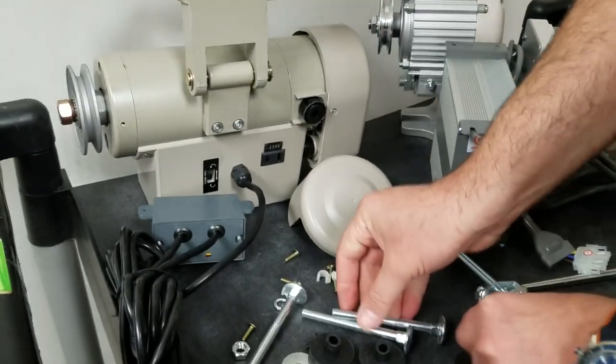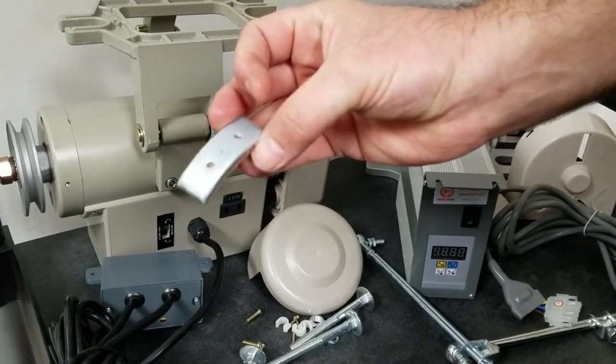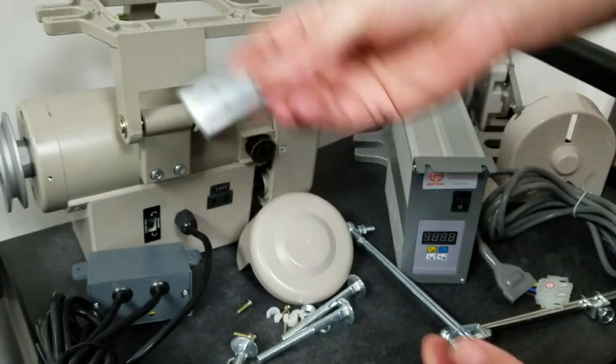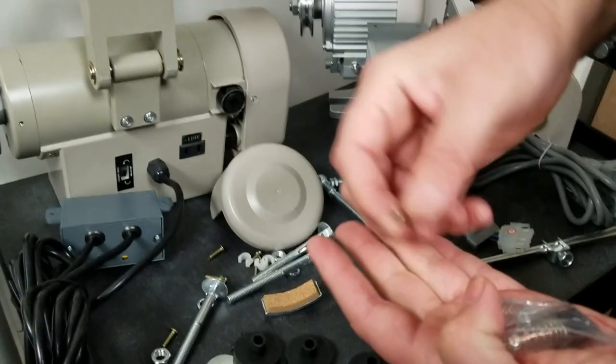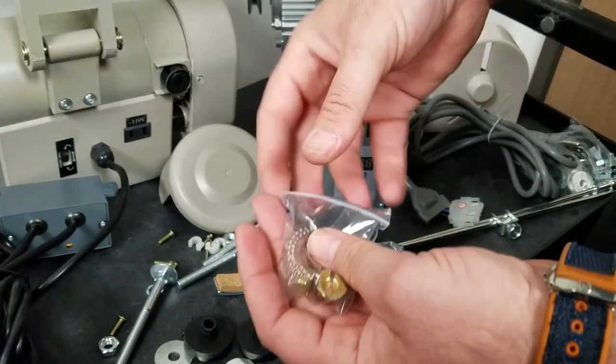You will also get one of these clutches, which I call a brake, which nobody uses ever. You don't need this. You get an extra fuse, might come in handy, and you get two brushes.